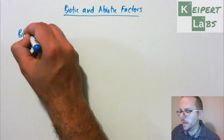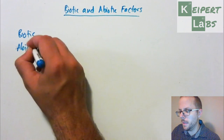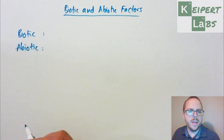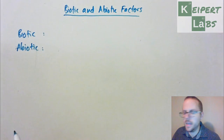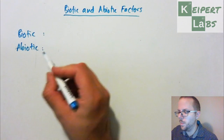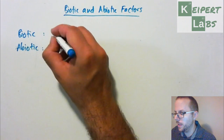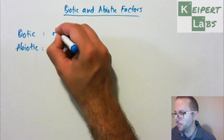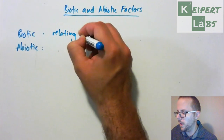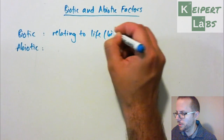As you might be able to tell from the spelling or the wording, these two words are closely related. When we're thinking about biotic, we're thinking about relating to life — that is 'bio', like in biology.